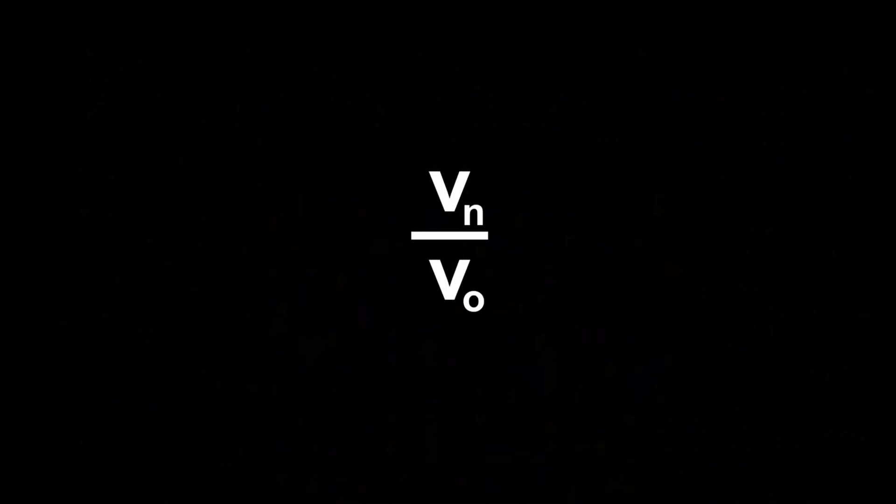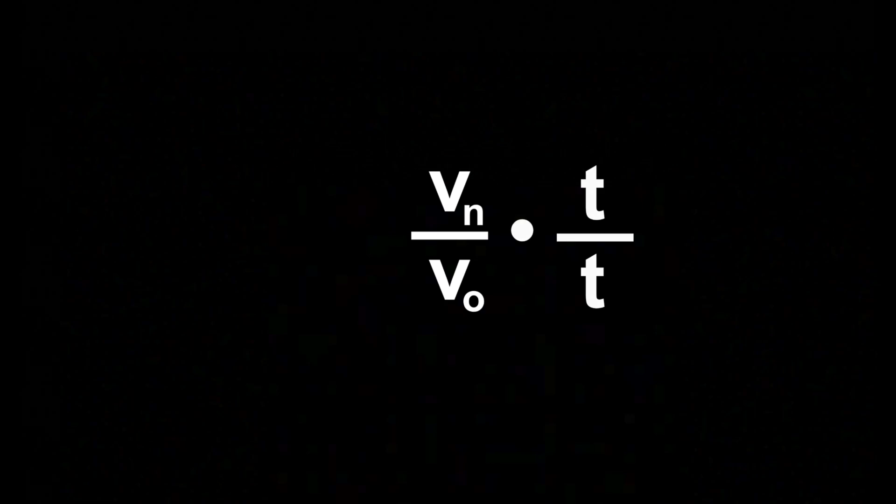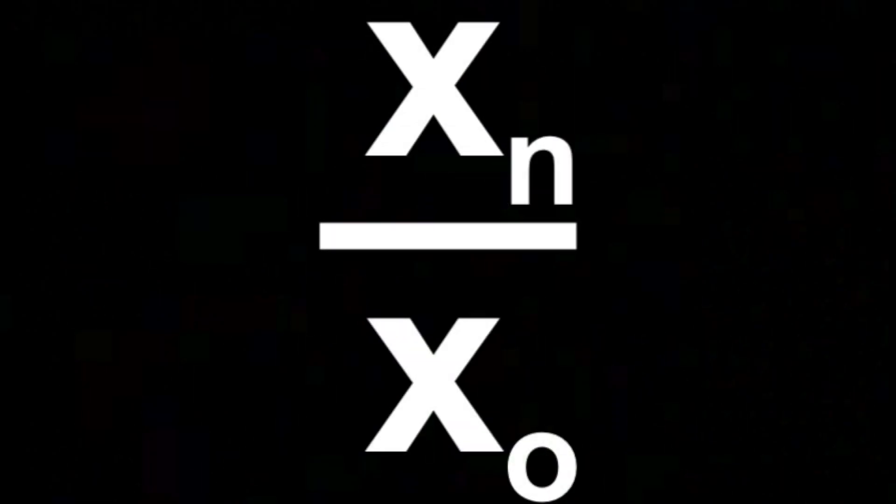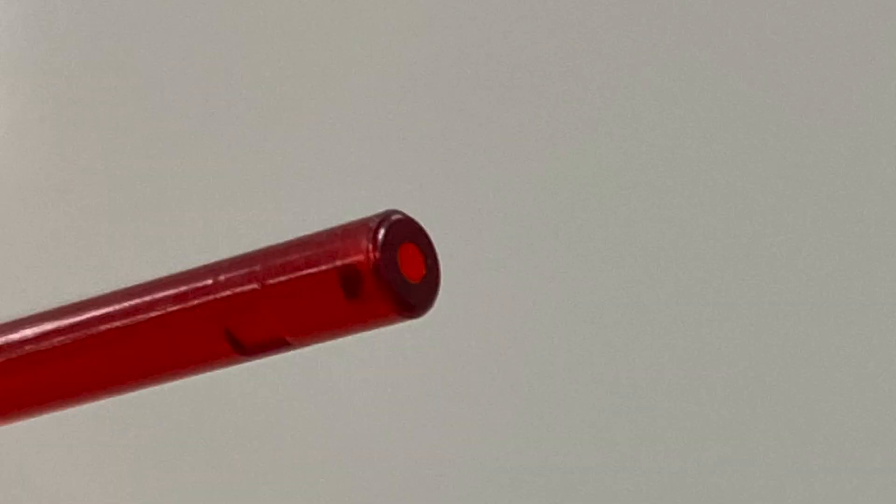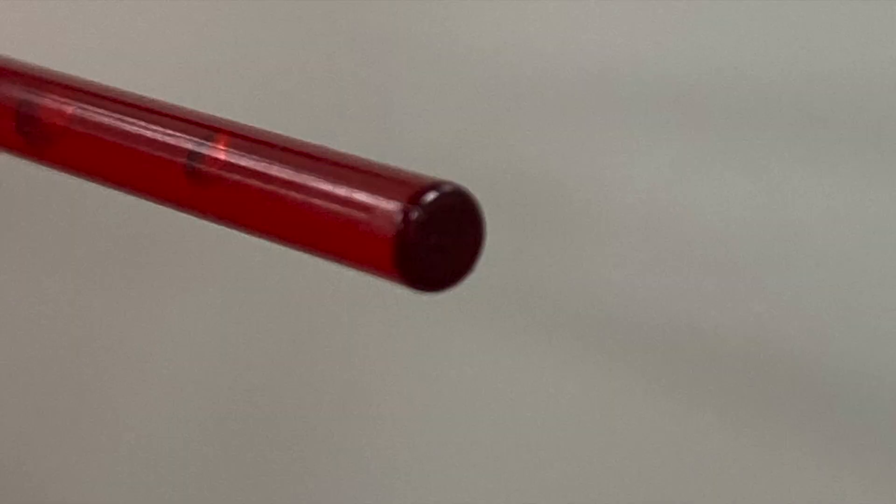Since they are traveling for the same amount of time, we can multiply by T over T, which is just a fancy way of writing one. And wouldn't you know it, how fast you're going multiplied by how long you go that fast for is how far you go. And there you have it. That is why new spring loaded shooters go 0.0588% longer than they used to.